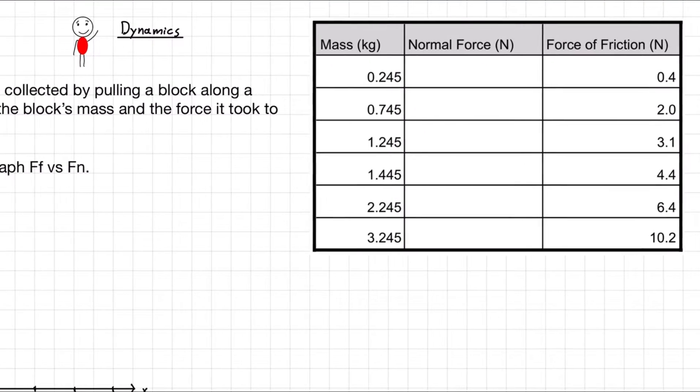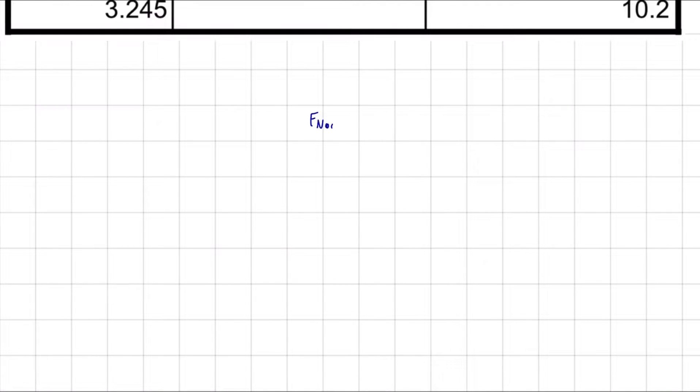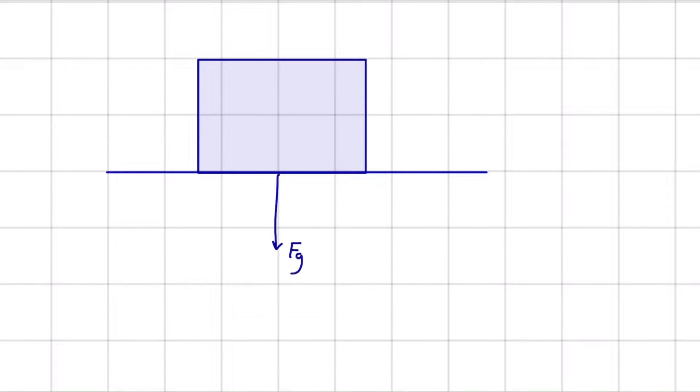First, taking a look at our data, we're missing the data for the normal force, so it's asking us to calculate that ourselves. What is the normal force? Let's take a look at some generic object just sitting on the ground. It's not being pushed in either direction, so it doesn't have any forces in the x-axis. But it will always have a force of gravity acting on it. Let's say this has a mass of 2 kilograms.